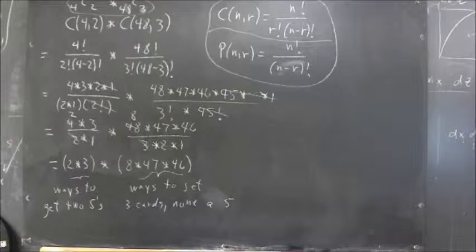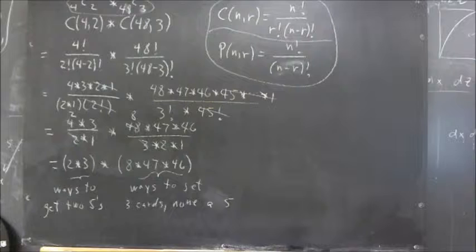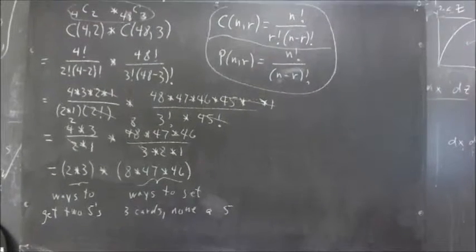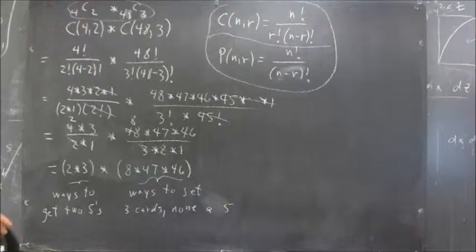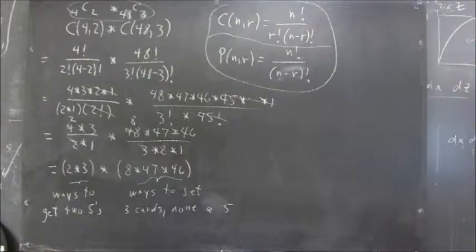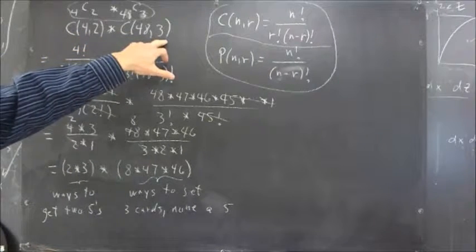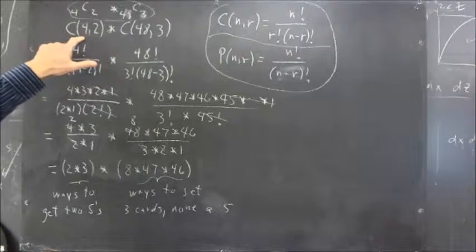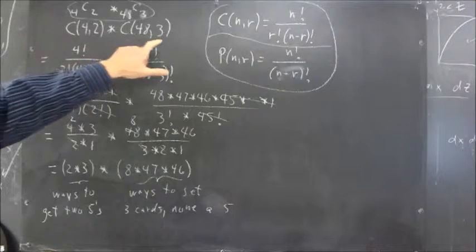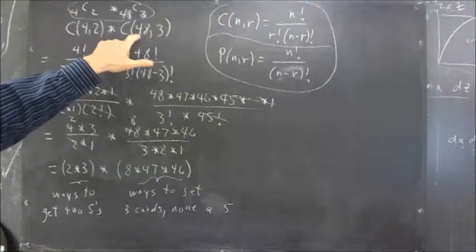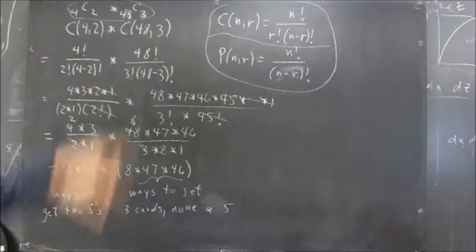In the problem we just did, we got the expression C(4,2) times C(48,3). Number of ways of choosing 2 out of the 4 fives in the deck. Number of ways of choosing 3 out of the 48 cards that are not fives.